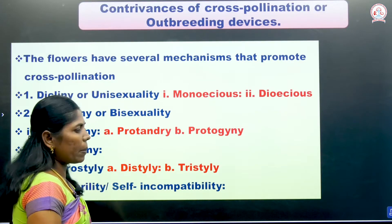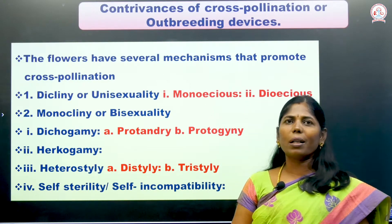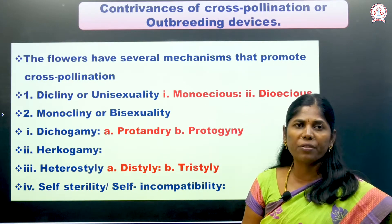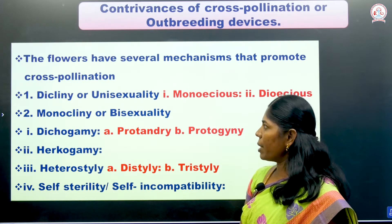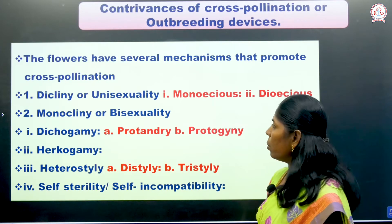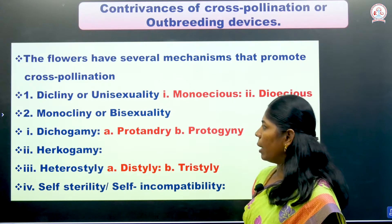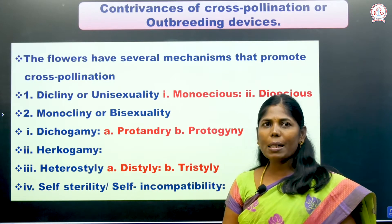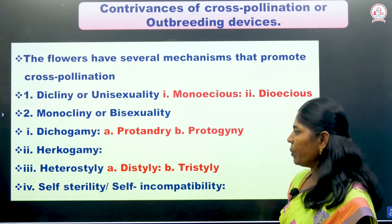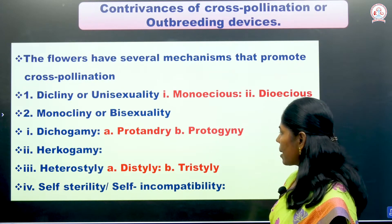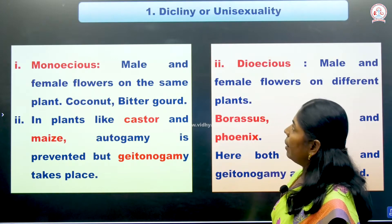Now we will see adaptations that promote cross pollination. The first is diclinty (unisexuality), second is monoclinty or bisexuality, third is dichogamy — protandry and protogyny — another is hercogamy, next is heterostyly — distyly or tristyly — and the last is self-sterility or self-incompatibility.